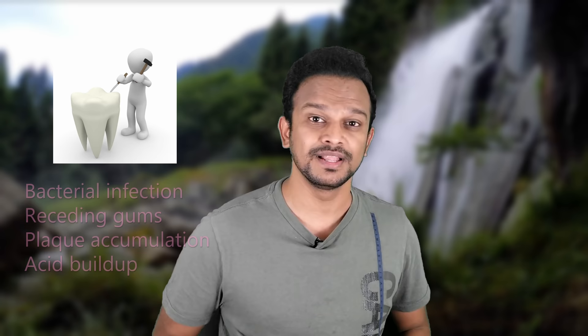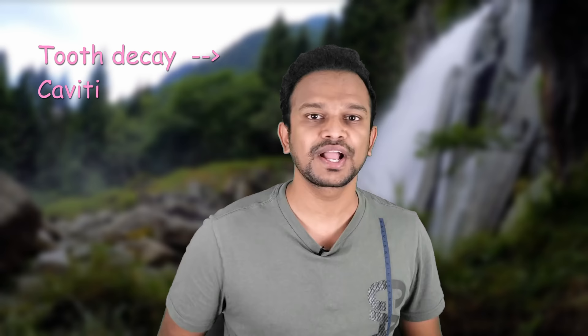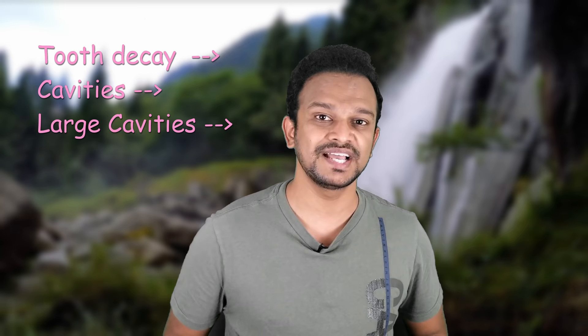Tooth decay is a gradual damage to your enamel due to bacterial infection, receding gums, plaque accumulation, or acid buildup on the teeth. Tooth decay is a kind of first stage to permanent tooth loss. If tooth decay is not treated or ignored, it causes tiny holes in the teeth called cavities. When these cavities are not treated in the early stages, they may grow larger in size and eventually destroy entire teeth.